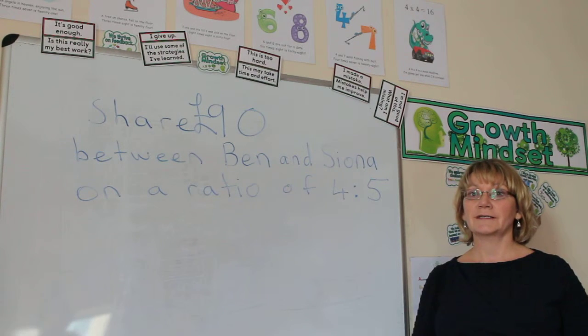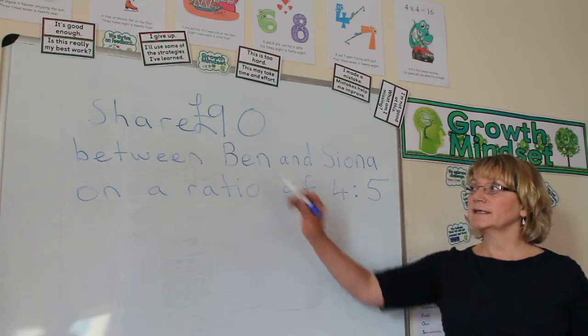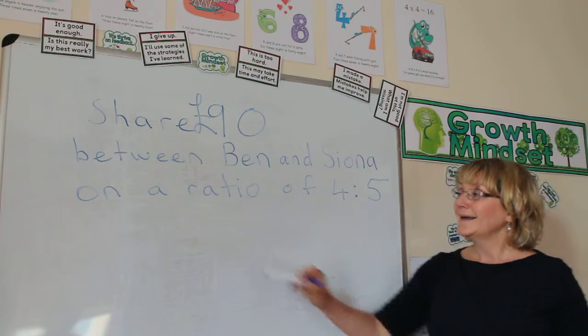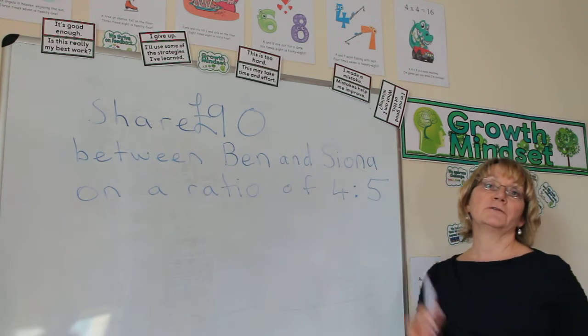This is a ratio style question. We've got to share £90 between Ben and Siona, lucky them, on a ratio of 5 to 4.